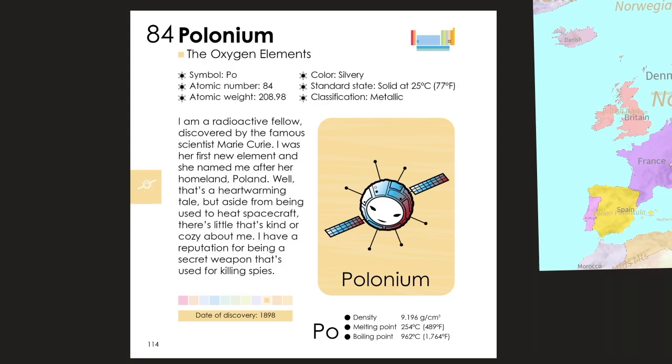Here we have polonium. I am a radioactive fellow discovered by the famous scientist Marie Curie. I was her first new element and she named me after her homeland, Poland. Well, that's a heartwarming tale, but aside from being used to heat spacecraft, there's little that's kind or cozy about me. I have a reputation for being a secret weapon that's used for killing spies.